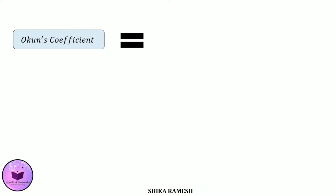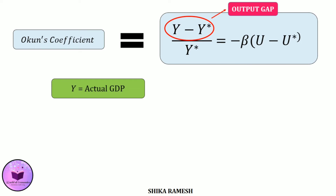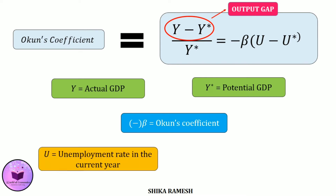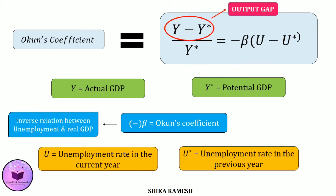Okun's coefficient can be calculated using the formula: Y minus Y-star divided by Y-star is equal to negative beta multiplied by U minus U-star. Here, Y is the actual GDP, Y-star represents the potential GDP, negative beta represents Okun's coefficient, U is the unemployment rate in the current year, and U-star is the unemployment rate in the previous year. And Y minus Y-star represents the output gap — it is nothing but the actual GDP minus the potential GDP.